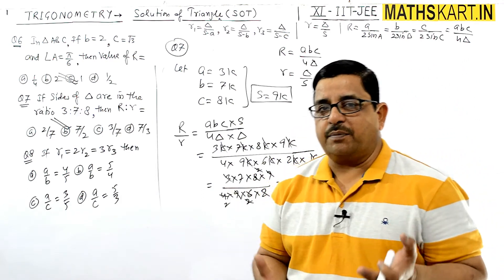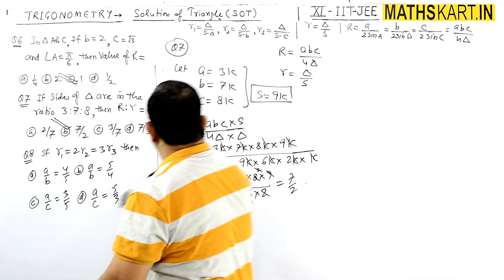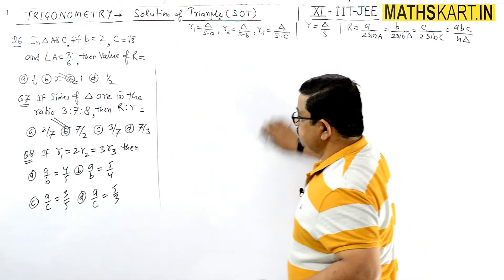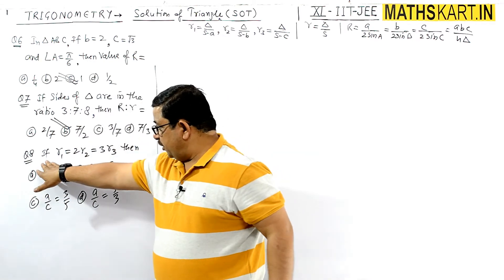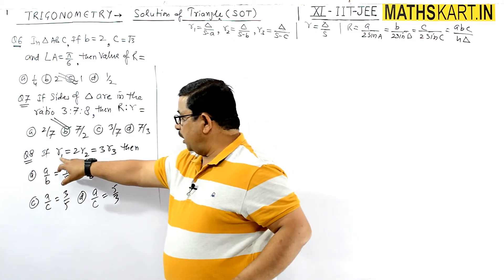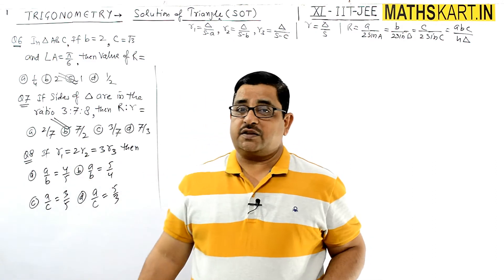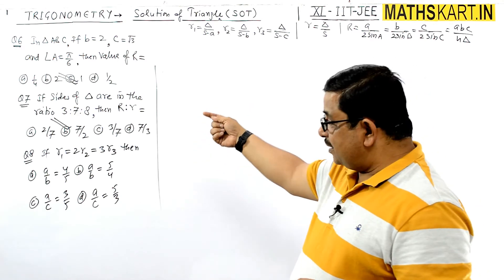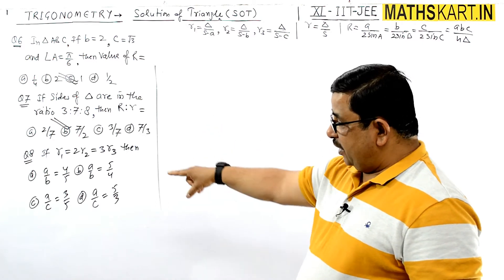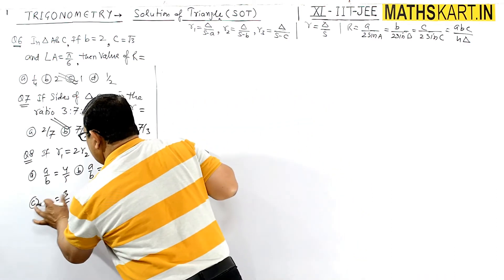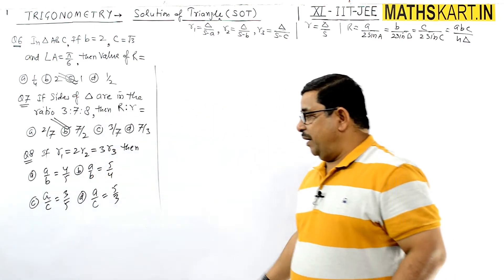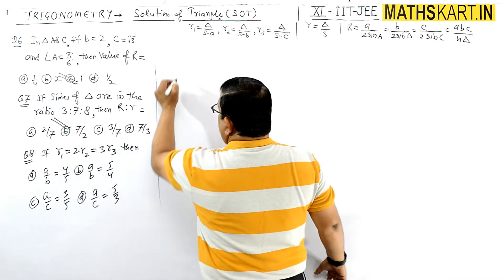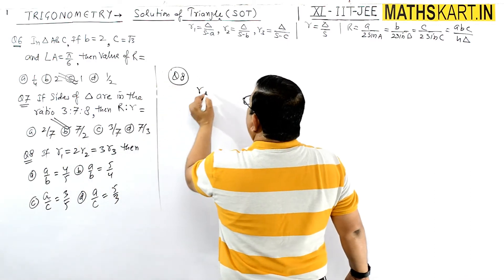Question number 8: If 2r1 = 2r2 = 3r3, find the ratios a/b and a/c. Options are 4/5, 5/4 for a/b and 3/5, 5/3 for a/c. Using r1 = Δ/(s-a), r2 = Δ/(s-b), r3 = Δ/(s-c), place the values.